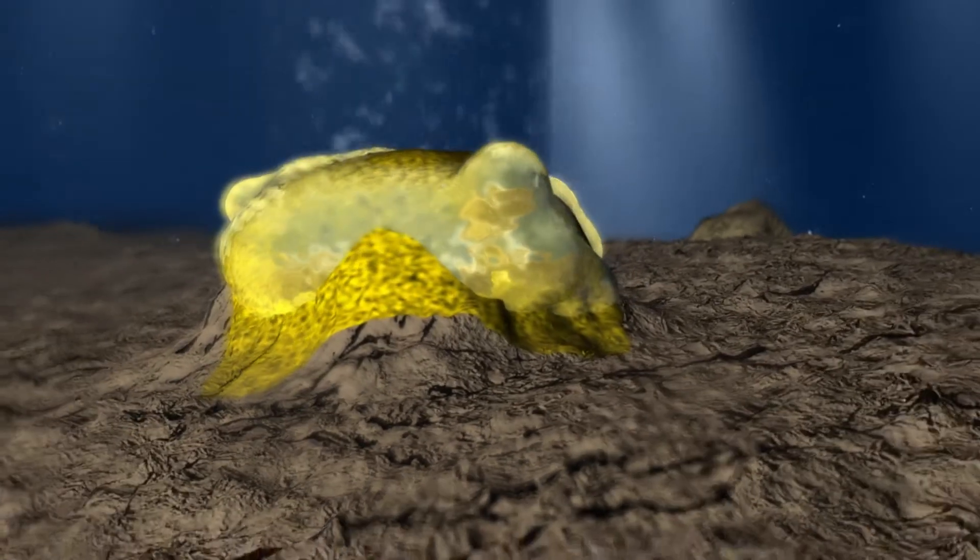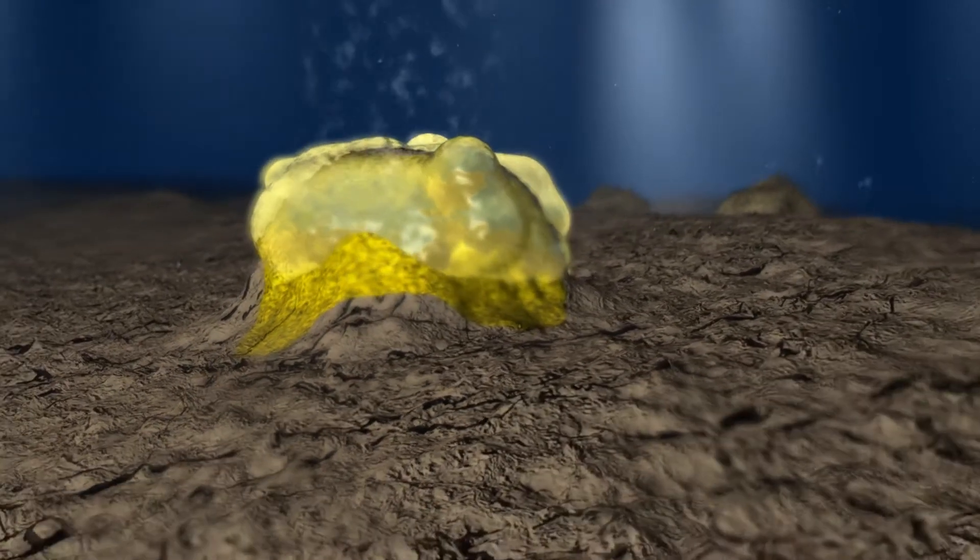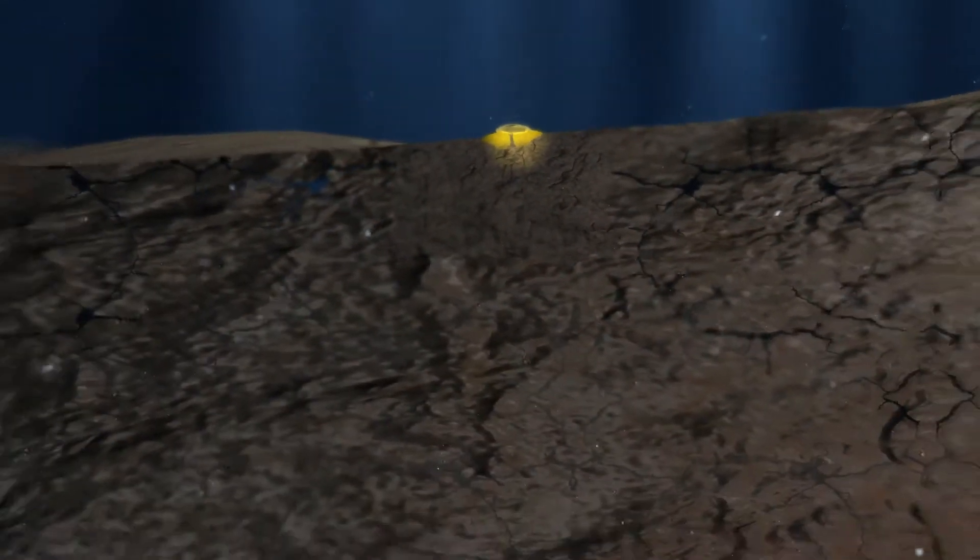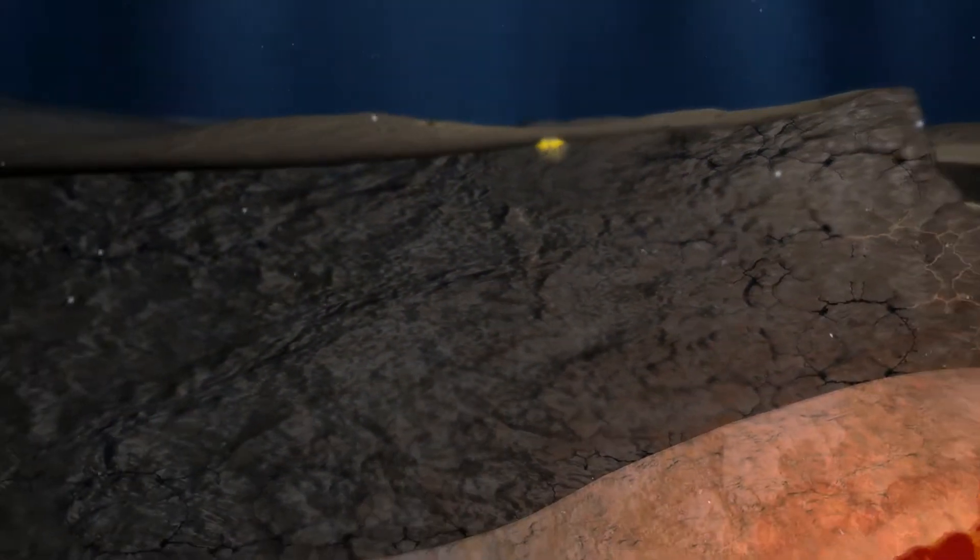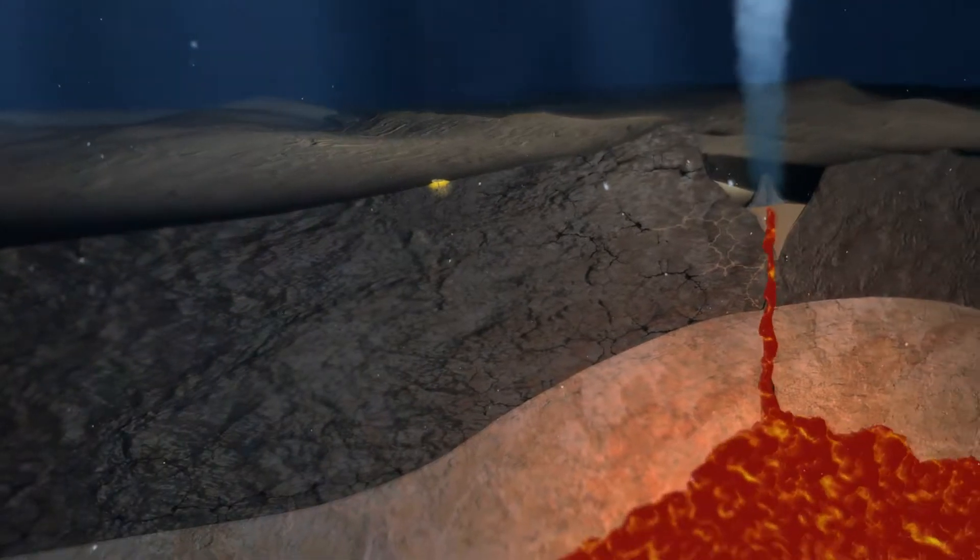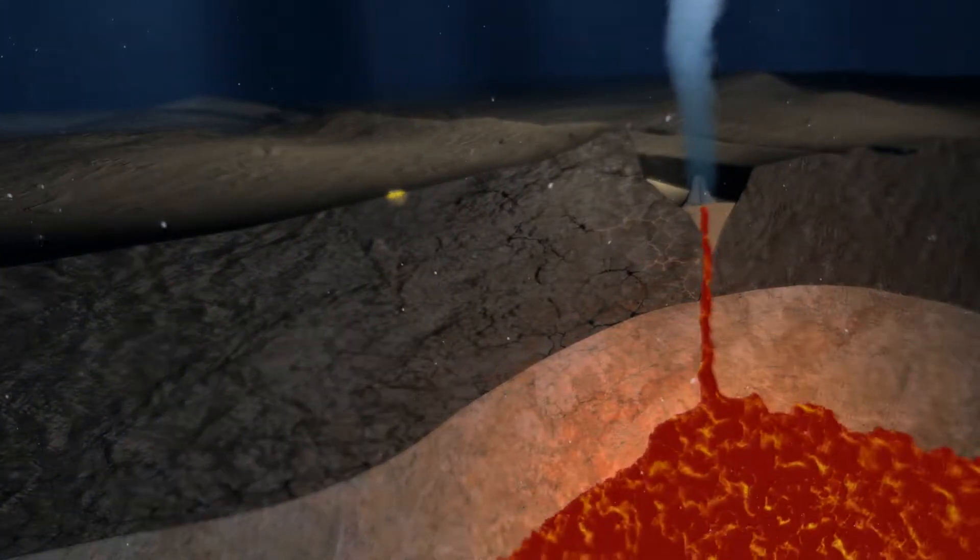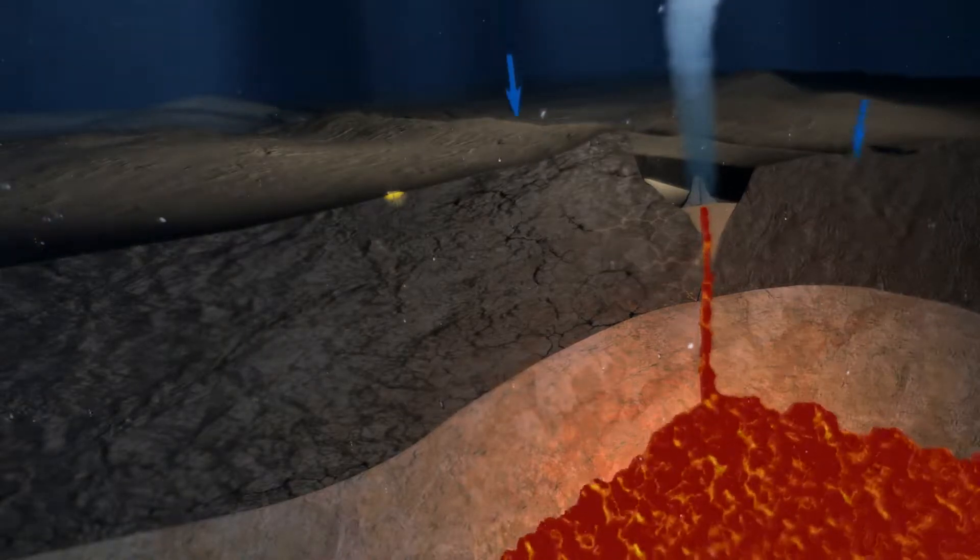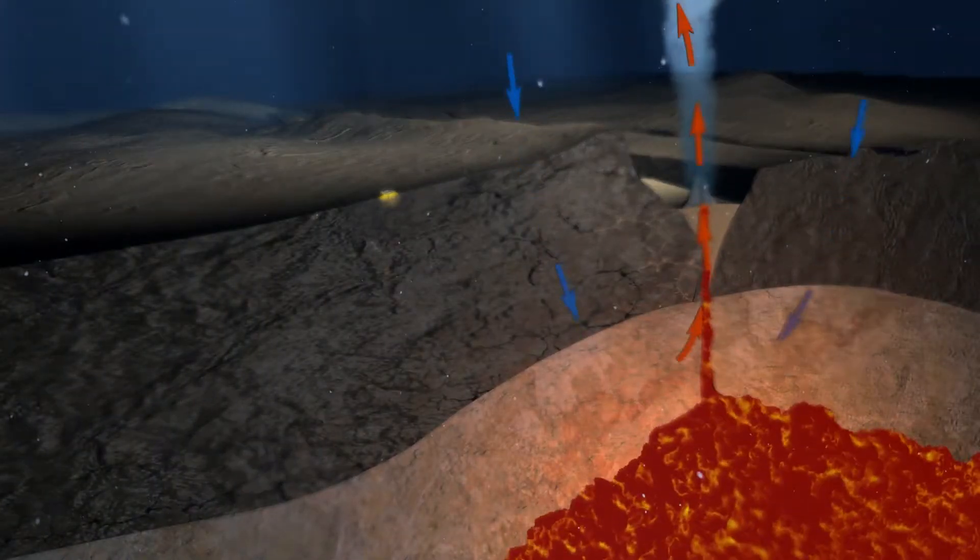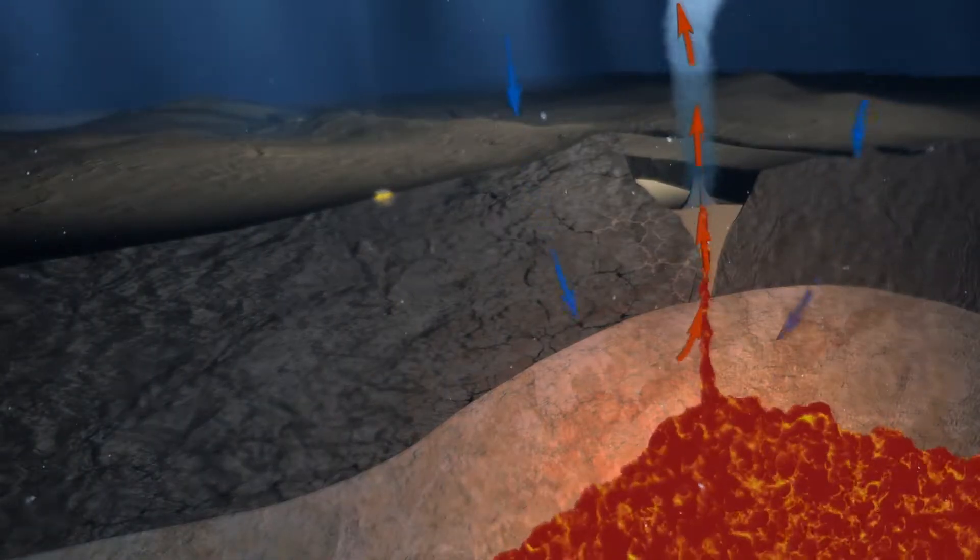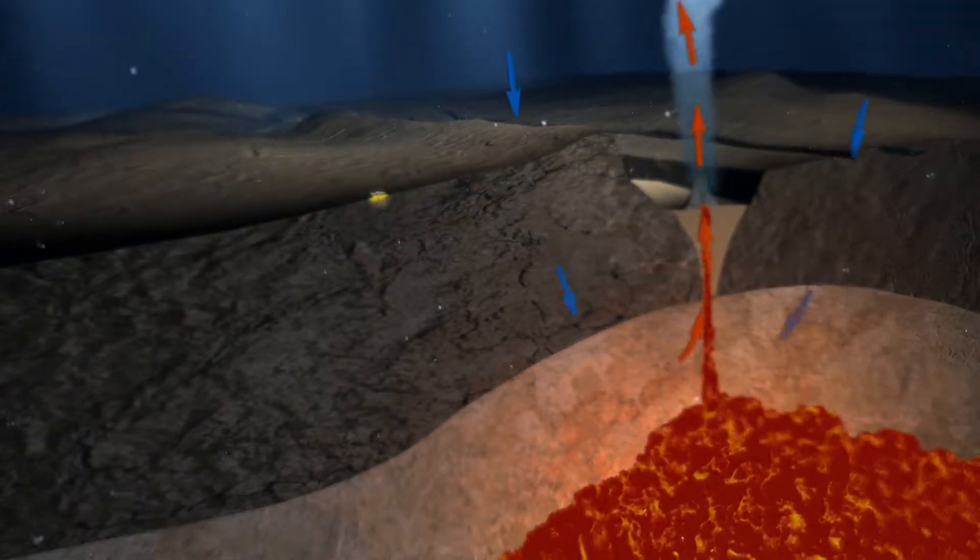The geochemical differences between these two types of vents are substantial. On the right, a black smoker is shown. Black smokers sit directly on top of magma chambers at oceanic spreading zones. Water from the sea floor is drawn down into cracks in the crust. It comes into close contact with 1200 degree magma and exits black smokers at roughly 400 degrees. That is too hot for microbial life.